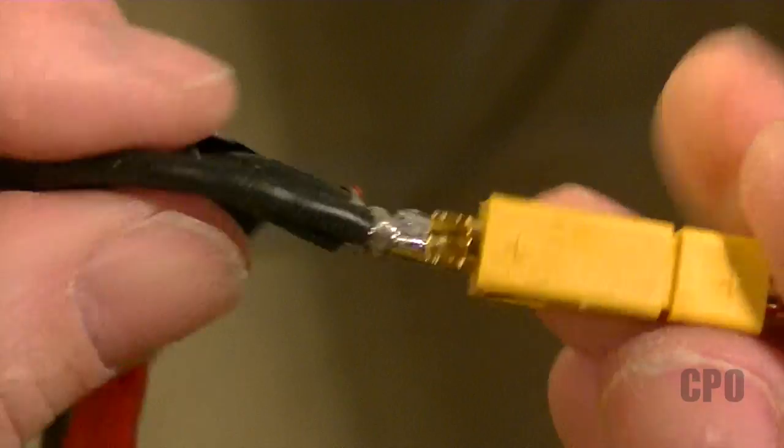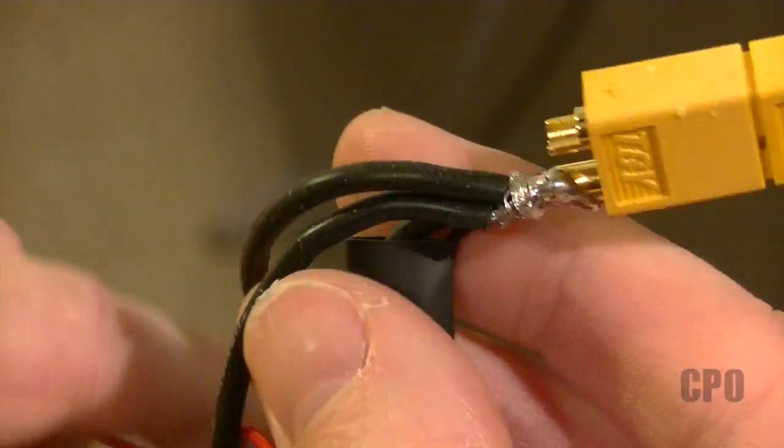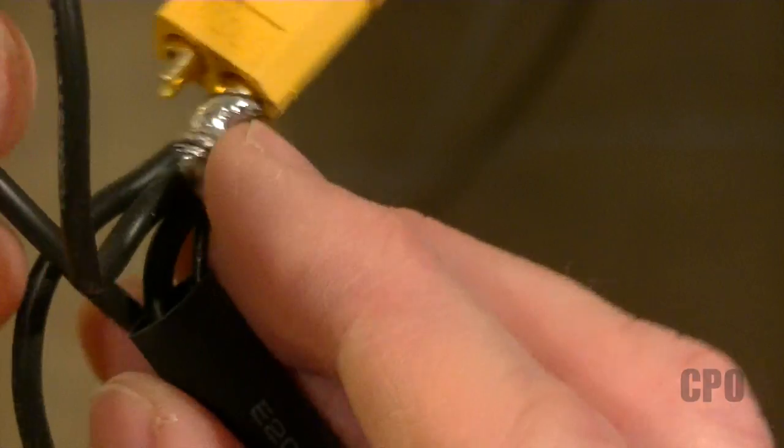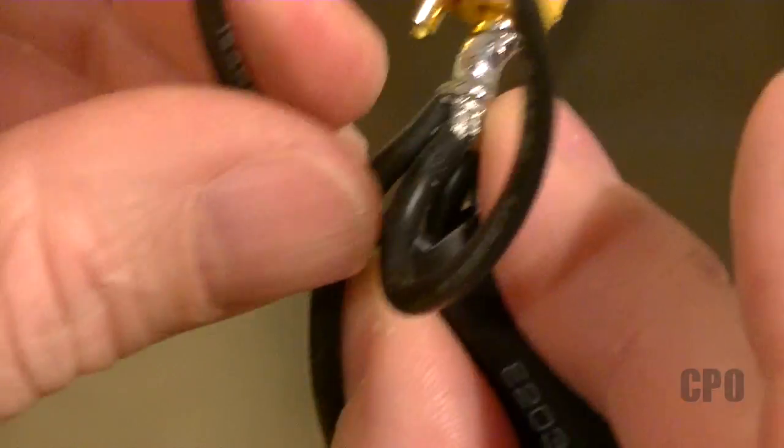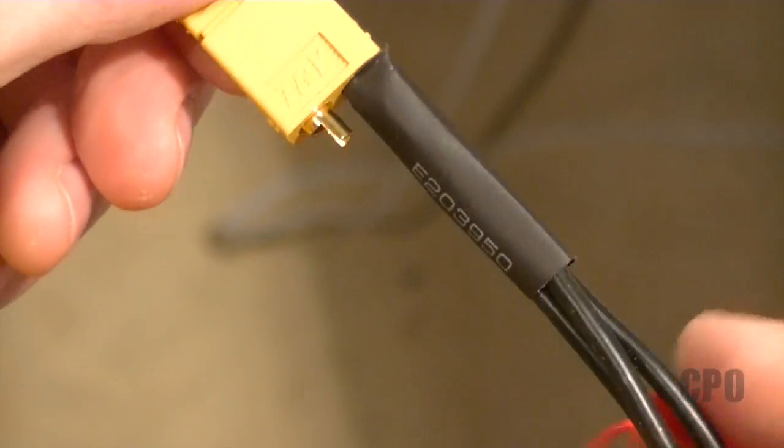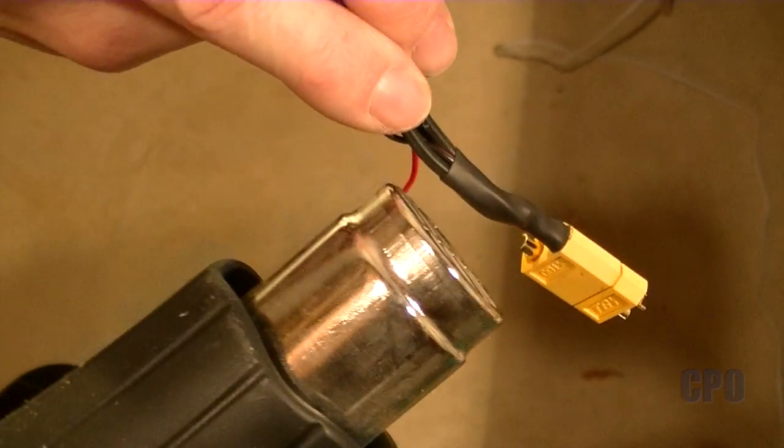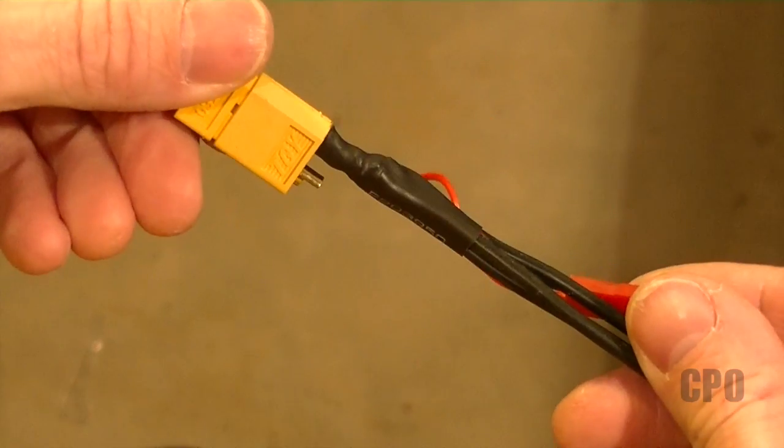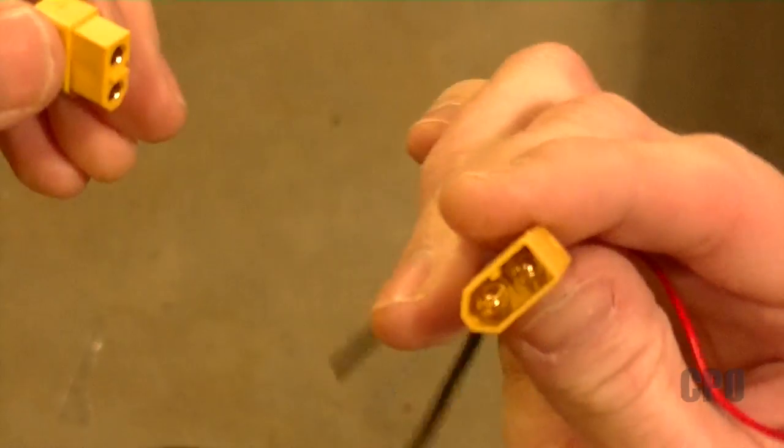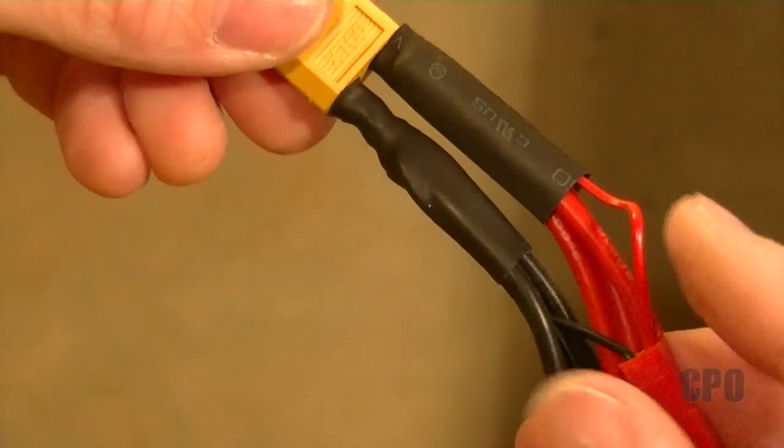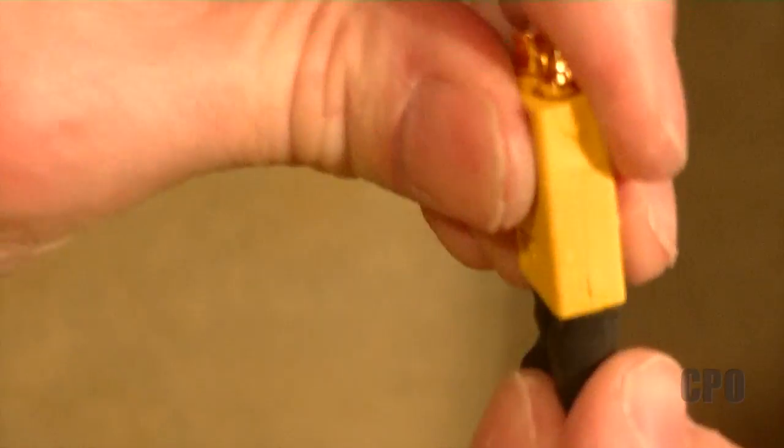Now I need to put some shrink tubing on and I'll admit this is easier to do before you actually solder the connector on, but it can be done at least for now after the fact. So once I get the shrink tube in place, I'll hit it with a heat gun. And the negative side is done. Now we repeat the entire process with the positive side. Oh, and this time you really want to have your shrink tubing on before you put the connector on.